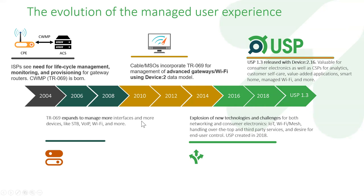Over time, TR69 was widely successful, even if it was just covering some of those basic use cases, specifically firmware management and things like that, and expanded to many more interfaces and many more devices. Enough that we had to redo the data model to make it a little bit more structured. That used to be TR98, or the internet gateway device data model, but that has been deprecated for a very long time. Now we use what's known as the device two data model, or TR181.